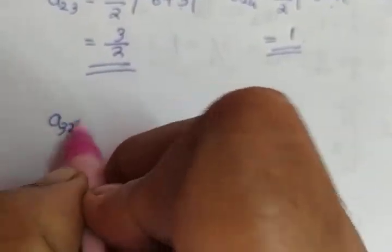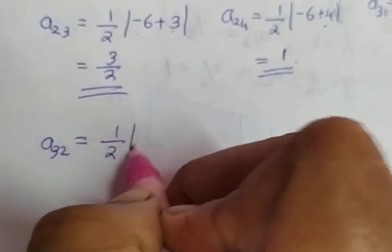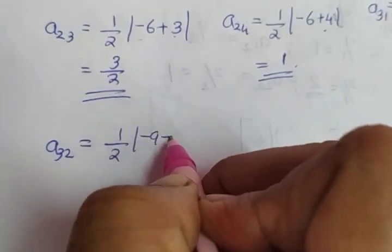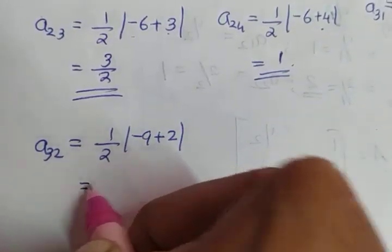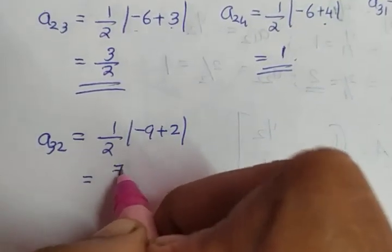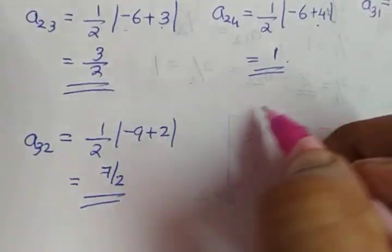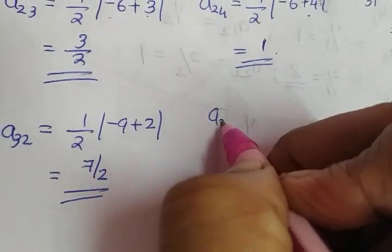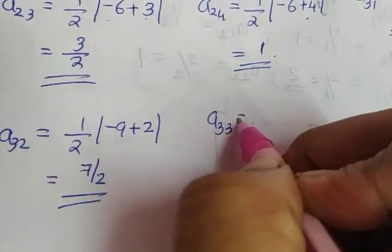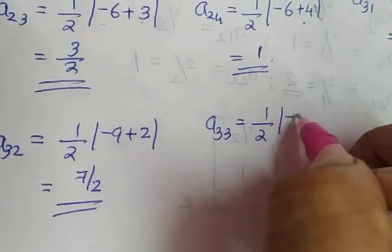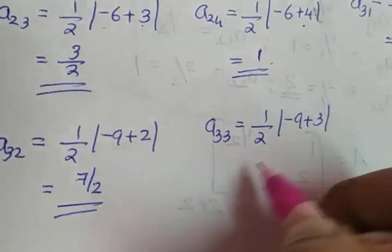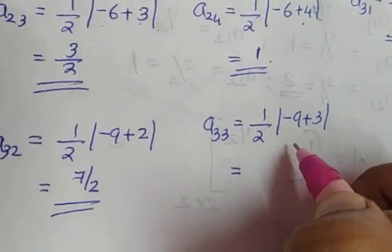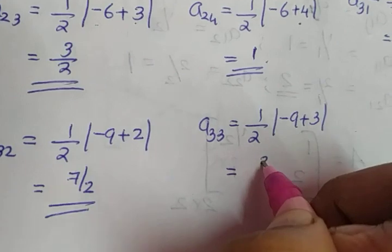The next one is A32. A32 is half into minus 9 plus 2. Minus 9 plus 2 is minus 7; modulus gives you 7, and the value is 7 by 2. A33 is half into minus 9 plus 3. Minus 9 plus 3 is minus 6; modulus is 6. 6 by 2 gives you 3.